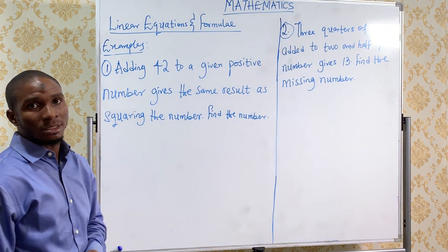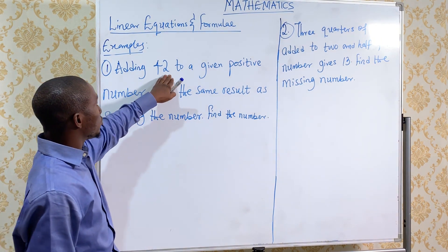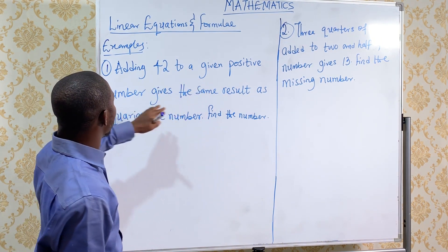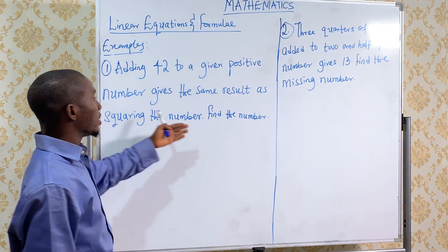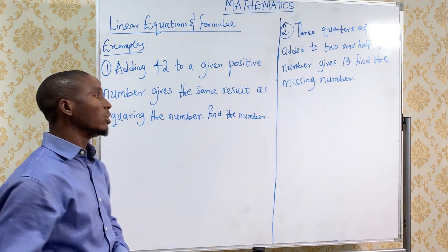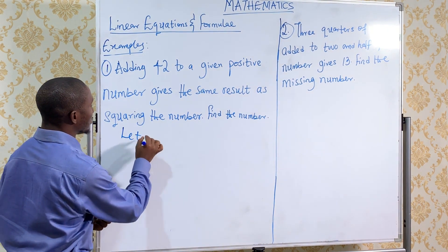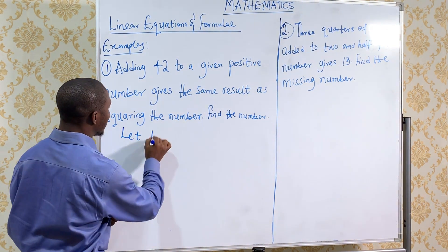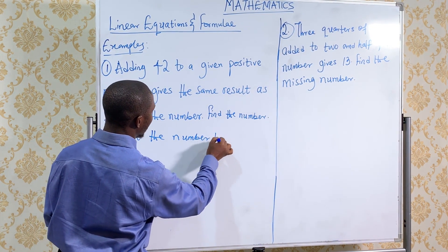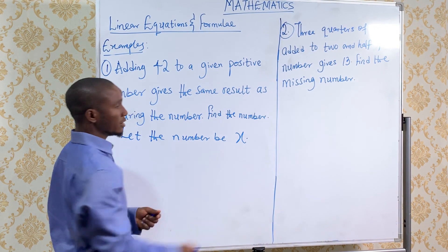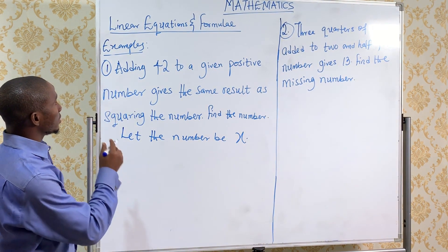Let's try this question: Adding 42 to a given positive number gives the same result as squaring the number. Find the number. In the question, the first thing you do is represent the number with an alphabet. Let the number be x, for example.